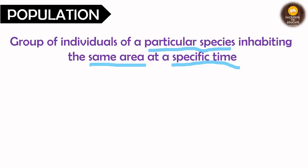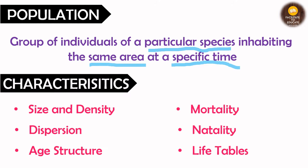There are basically 6 characteristics of population. The first one is size and density, then dispersion, age structure, mortality, natality, and also life tables. Today we will be dealing with these two: size and density, and dispersion.